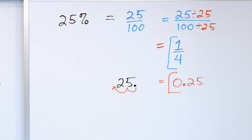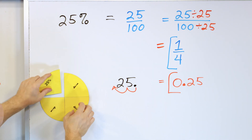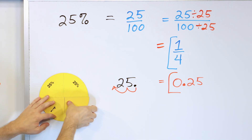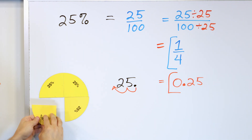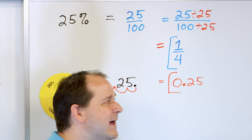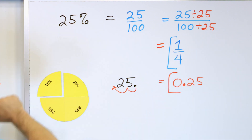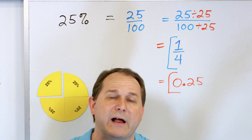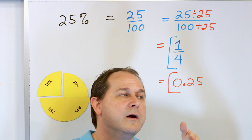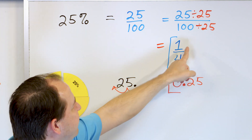So 25% can be written as the decimal 0.25, or as the fraction 1 fourth — all three are the same thing. If we build a pizza out of fourths: one fourth, two fourths, three fourths, four fourths. Each one fourth is equivalent to 25%. If you add all four pieces, you get 100%. Notice that the numbers in the decimal are the same as the percent; the decimal point just moves two spots to the left.